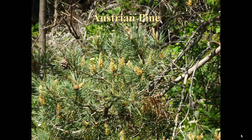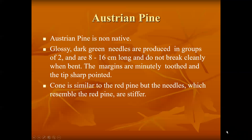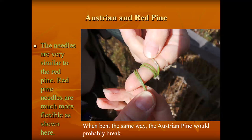Austrian pine is very similar to the red pine. If you're thinking about it on TreeBee, choose red pine when they show you something that looks like Austrian or red. The needles are very similar, but red pine needles are more flexible — you can wrap them around your finger. If you tried to do this with Austrian pine, they would most likely break.